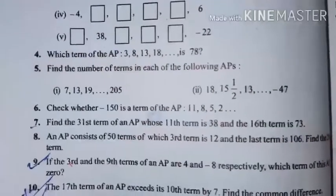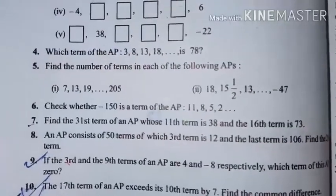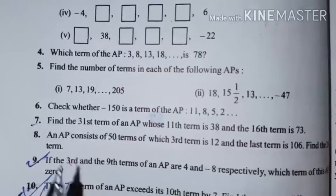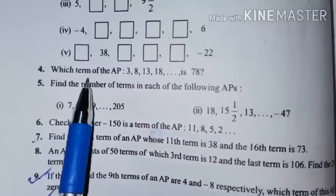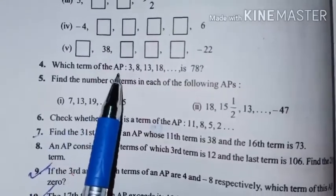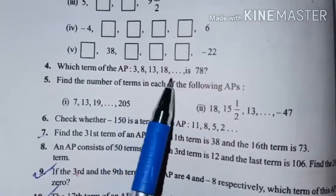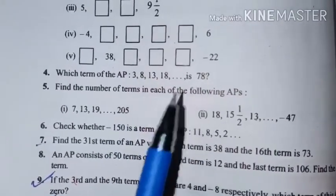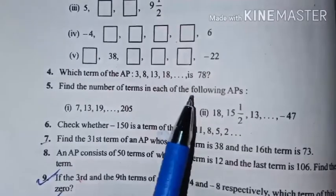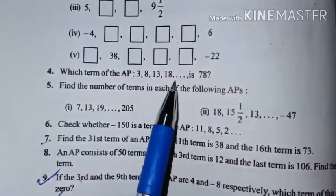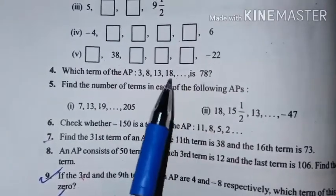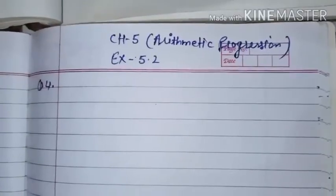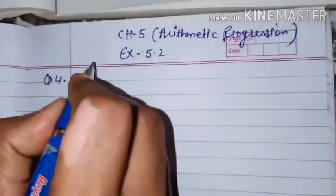Good morning students. Today we will discuss question number 4 of exercise 5.2. Question 4 is: which term of the AP 3, 13... is 78? It means we have to find at which number 78 will come in this AP.